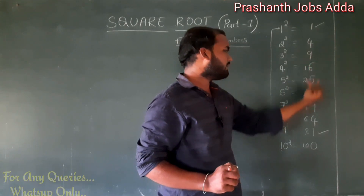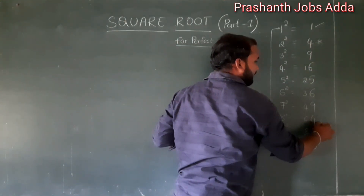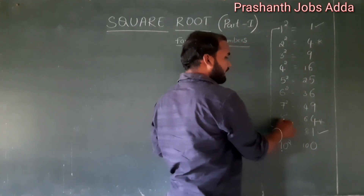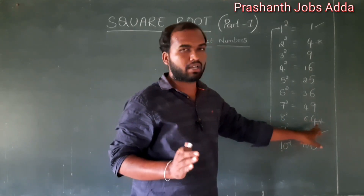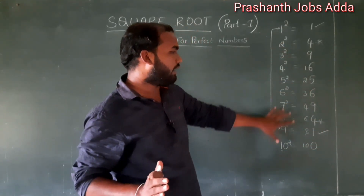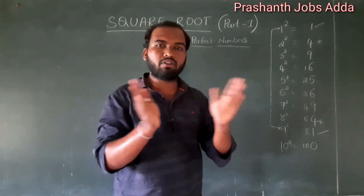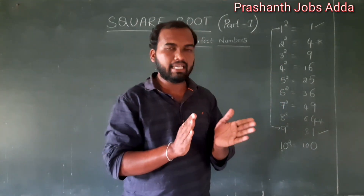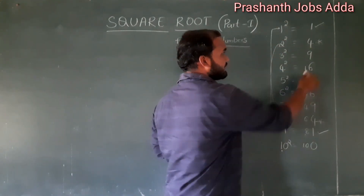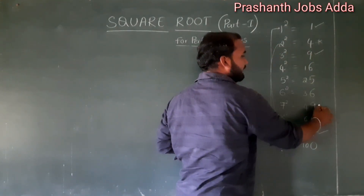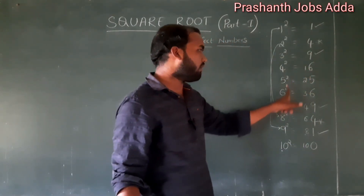If the last digit is 4, the possibilities are either 2 or 8. Two squared is 4 and eight squared is 64, both ending in 4. If the last digit is 6, the possibilities are either 3 or 7. If the last digit is 6, the possibilities are either 4 or 6.